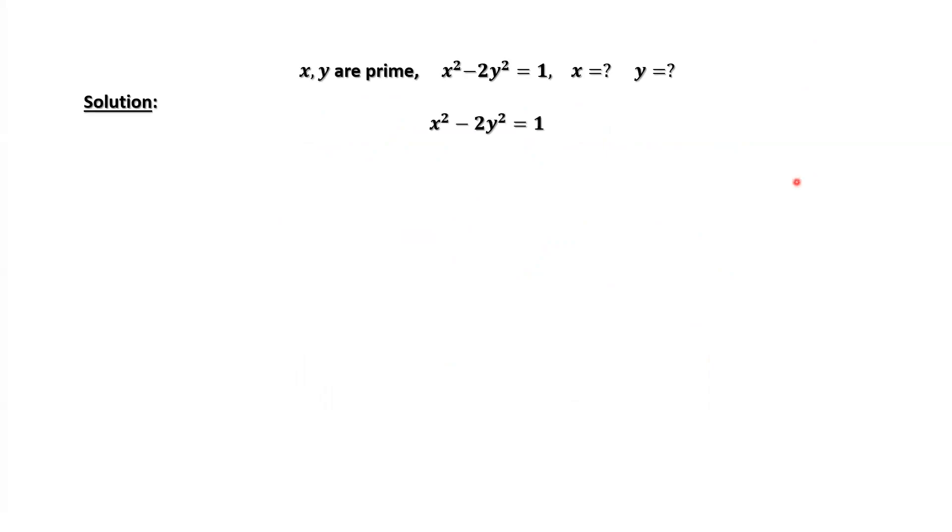This is the given equation. We move negative 2y squared to the right-hand side. We have x squared equals 2 times y squared plus 1. 2 times y squared, that's an even number. Even number plus 1 is an odd number.